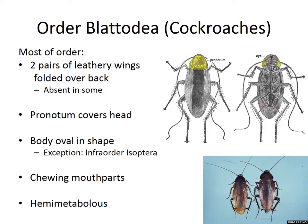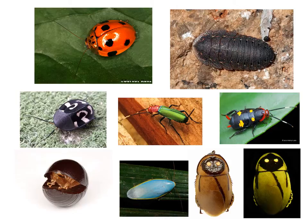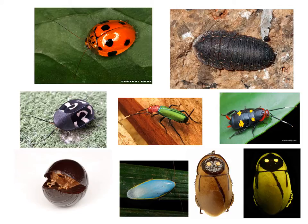Order Blattodea also has chewing mouthparts and is hemimetabolous. We typically think of cockroaches as these brown-winged things that flit around our homes and cause havoc. But when you get into the tropics, you actually find a fair amount of diversity in cockroaches — different forms, colors, things that mimic beetles or glow under black light or look more like isopods. So there's actually a lot of diversity in cockroaches, and they're a fairly understudied group.